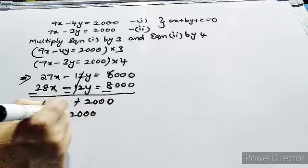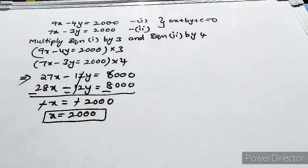You got the value of variable as x equals 2000. Here you are not finding any solution set. What is your answer? You have to find out what is the monthly income.